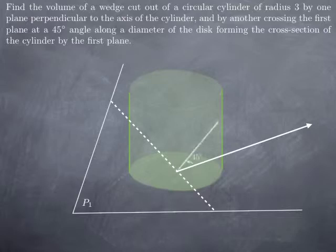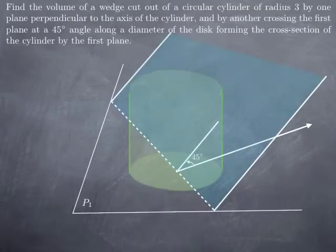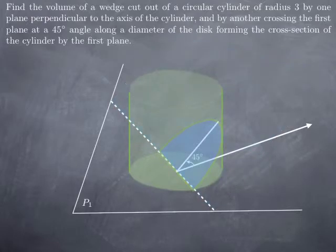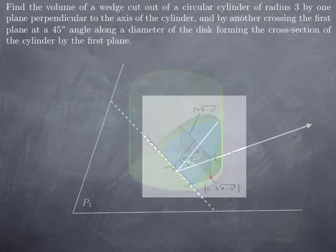Then I take an angle of 45 degrees with this new axis of coordinates, and the second plane that I'm considering is going to contain two lines: the dotted line and the line at 45 degrees with the axis. Therefore, it's going to intersect the cylinder along a parabola that looks like this, and therefore the wedge is going to look something like this.